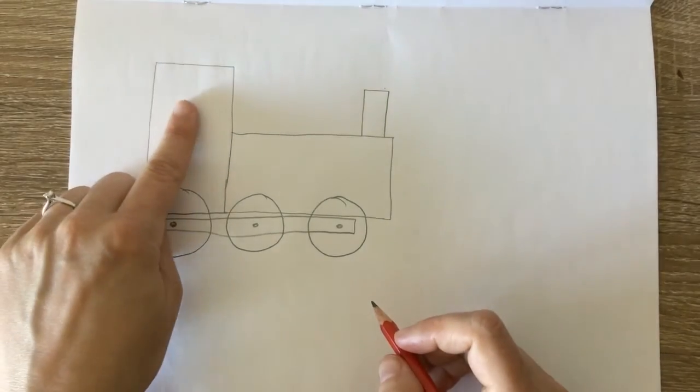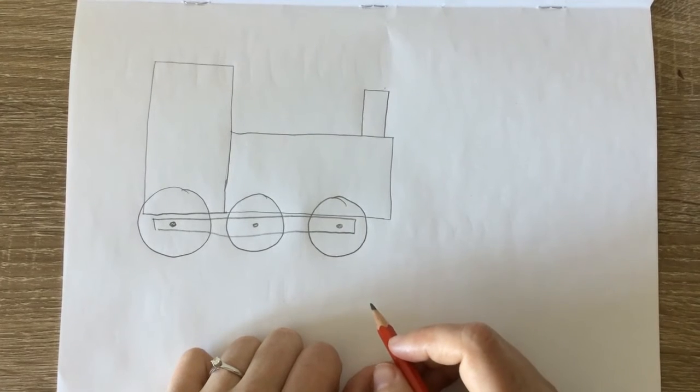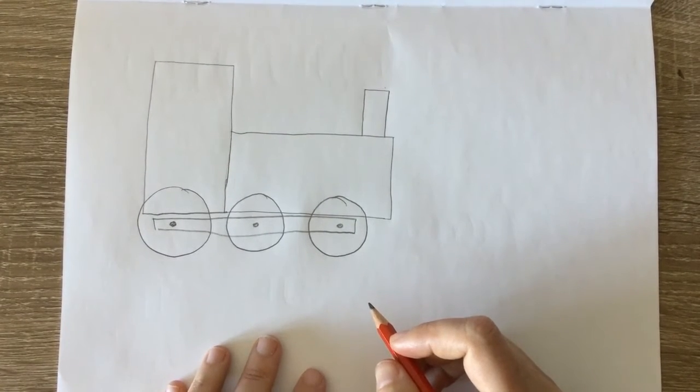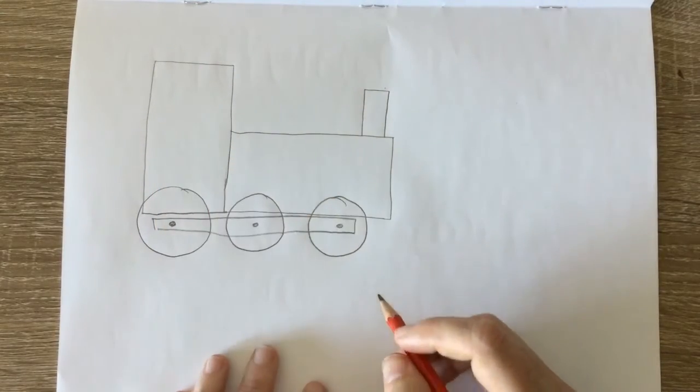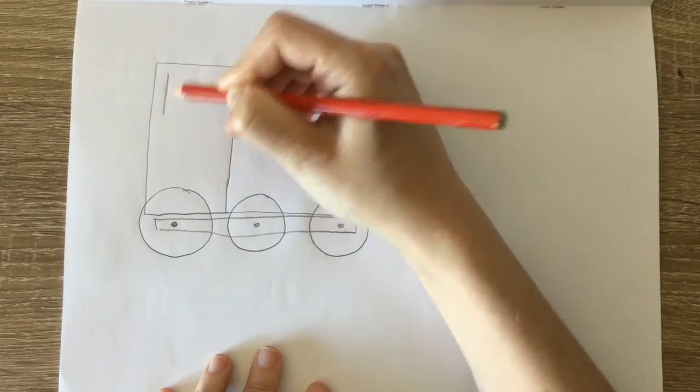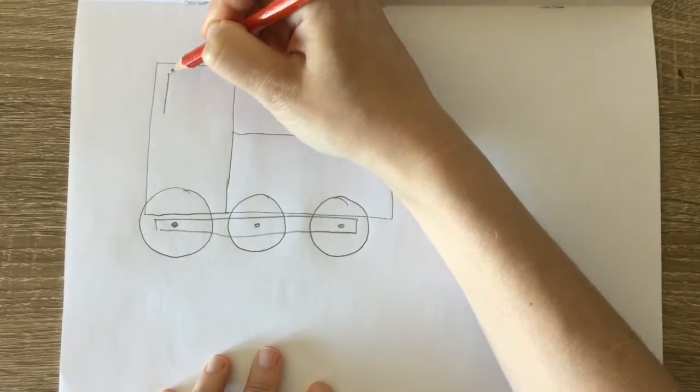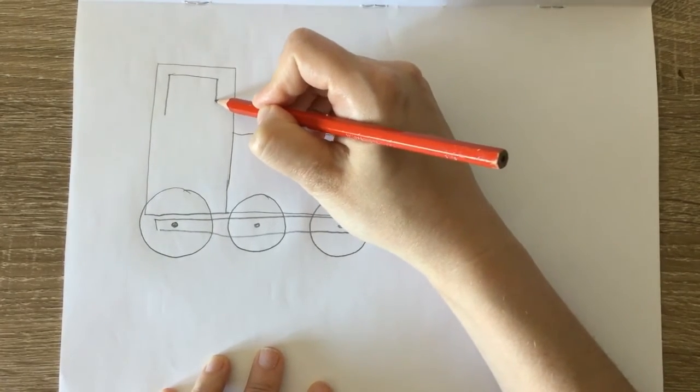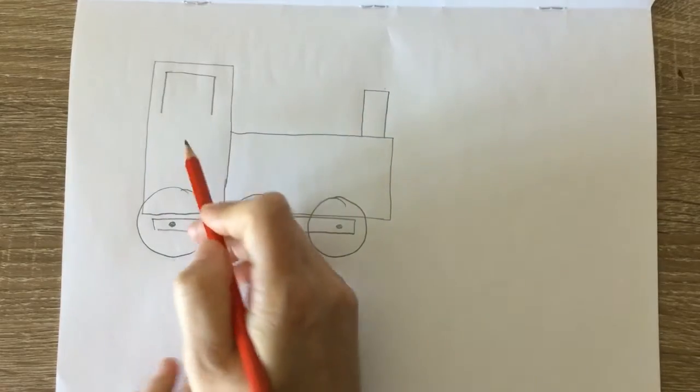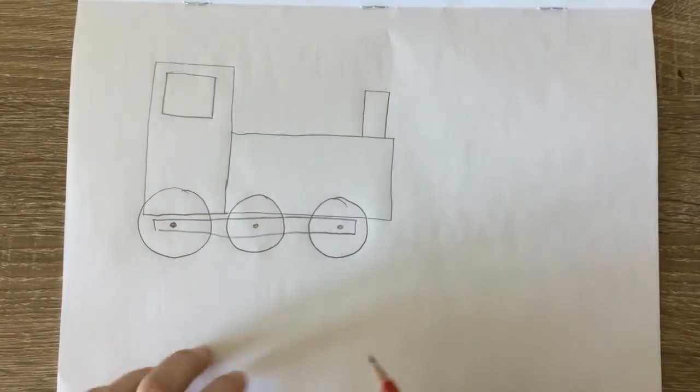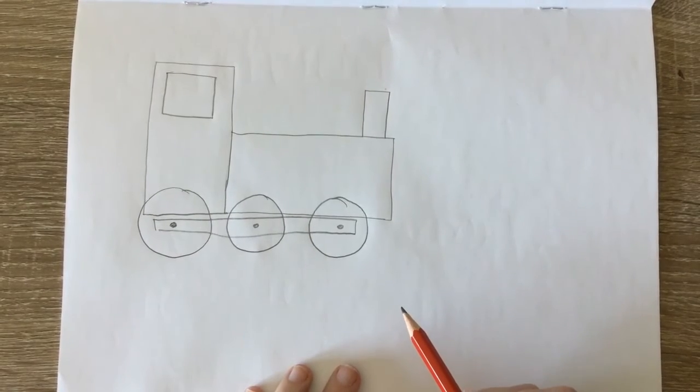Now I need to draw the window for my conductor. And I'm not going to draw a rectangle. I'm going to draw a square. Remember a square has four sides that are all the same. So we're going to try our best to do that. I've got one. Two. Three. Four. Four sides like that. There we go.